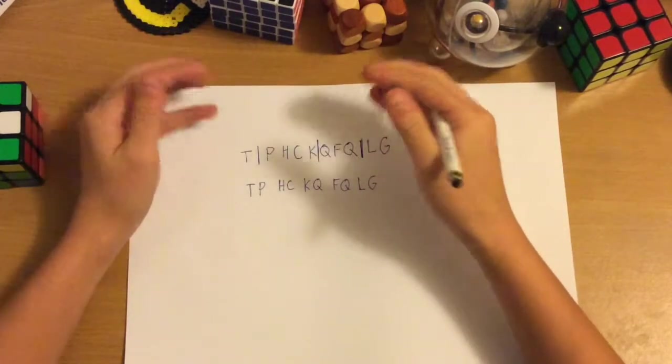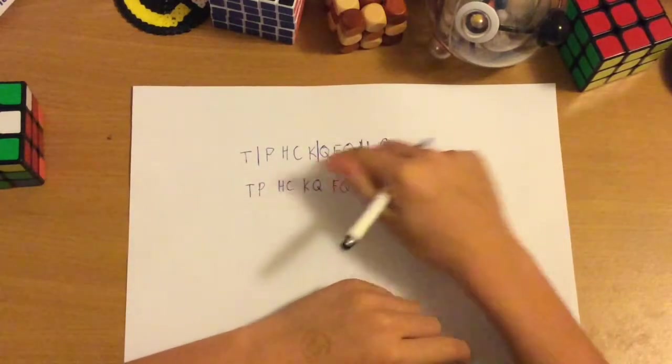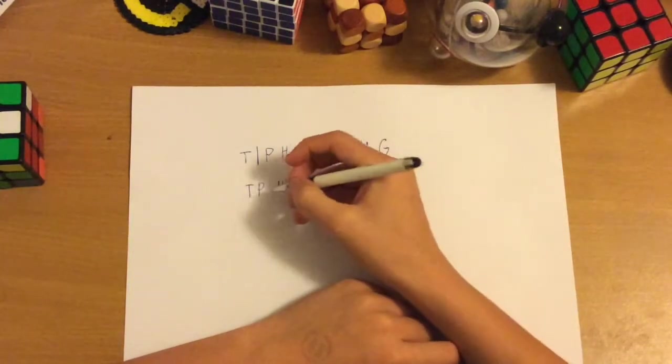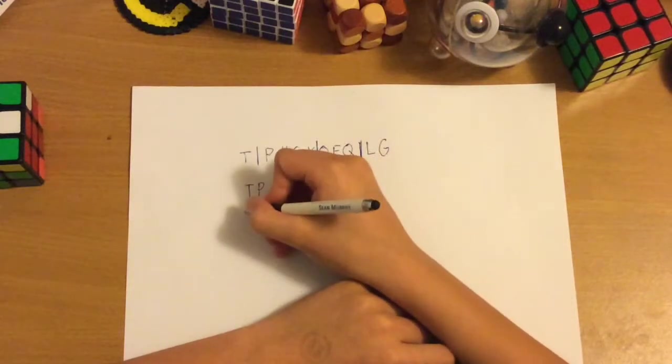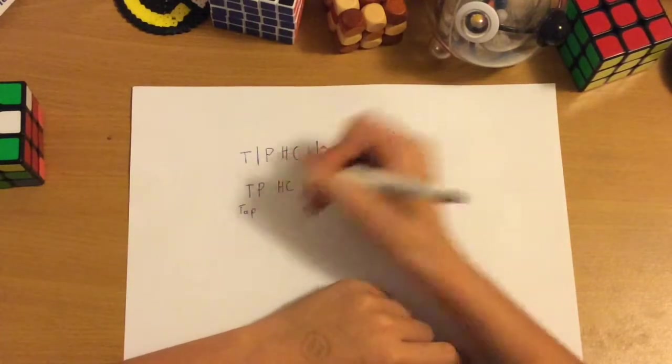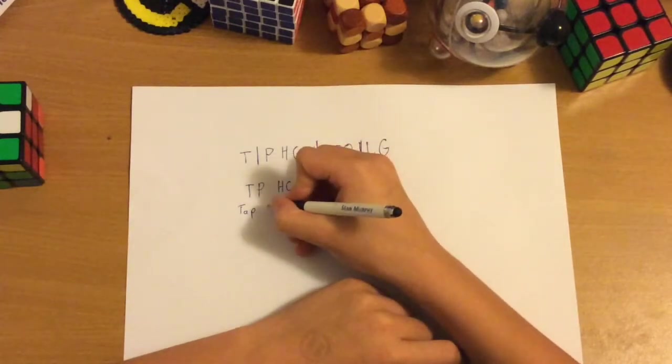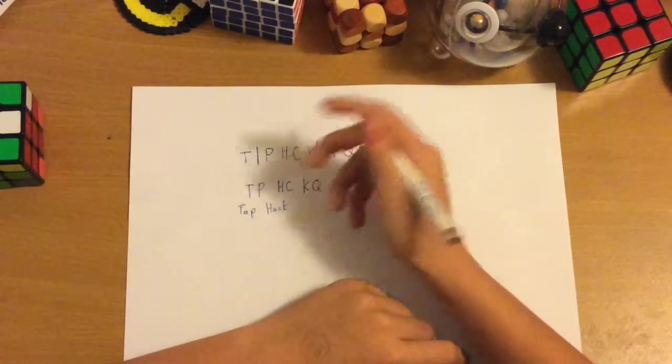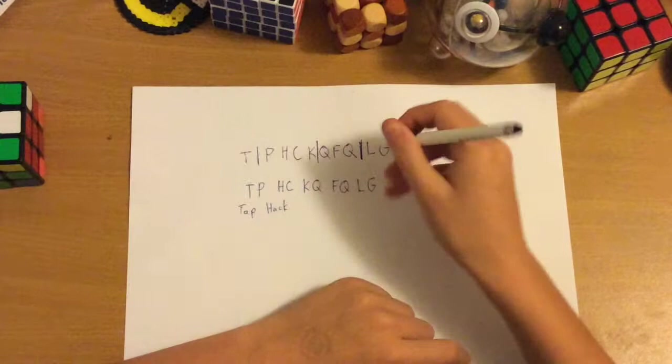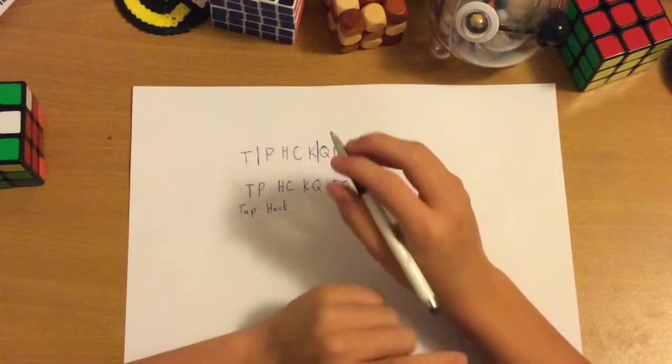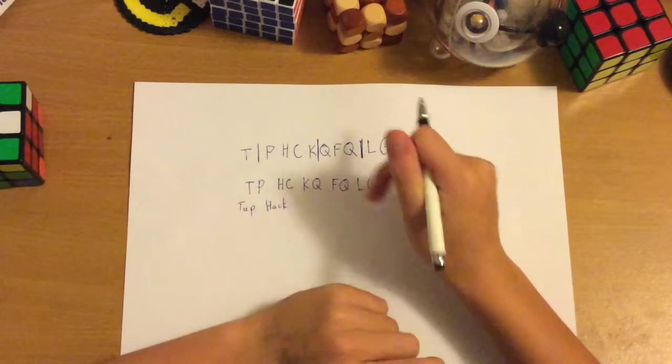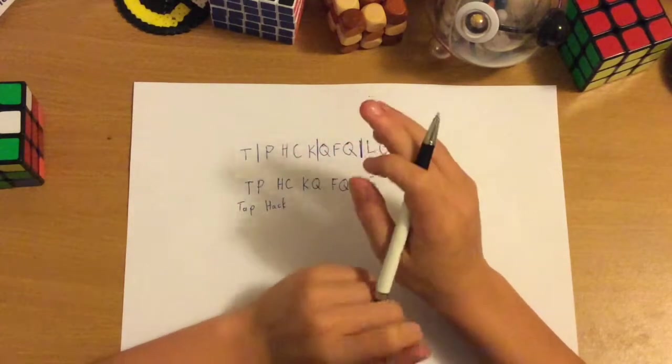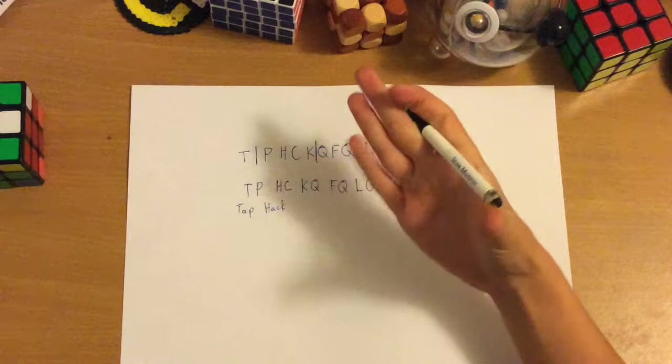So, now we're going to try to make up a picture using these five letter pairs. So, we'd obviously do this while we're memorizing, but for the sake of this video, I'll just do it now. So, T, P, we could probably use tap. Like, a drinking tap. And H, C is maybe hack. So, it's, so far we can make a sentence. K, Q, that's pretty hard. I usually just make up a word that has two Ks, because it's impossible when you're blind solving to have two Ks next to each other. So, for K, Q, I'll do kicks.